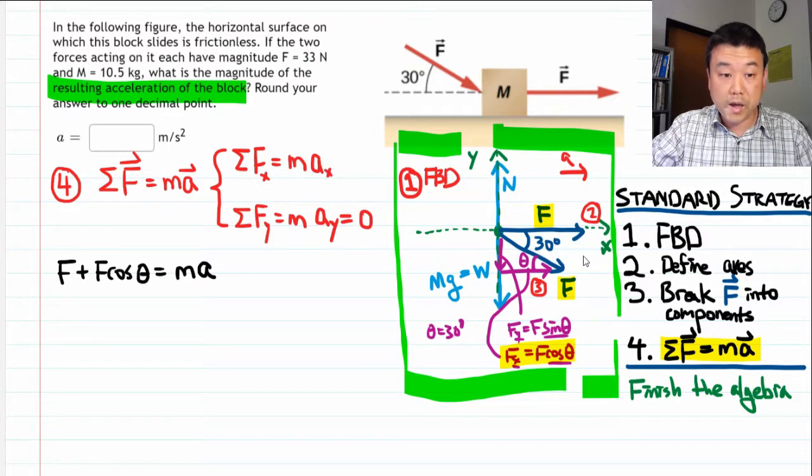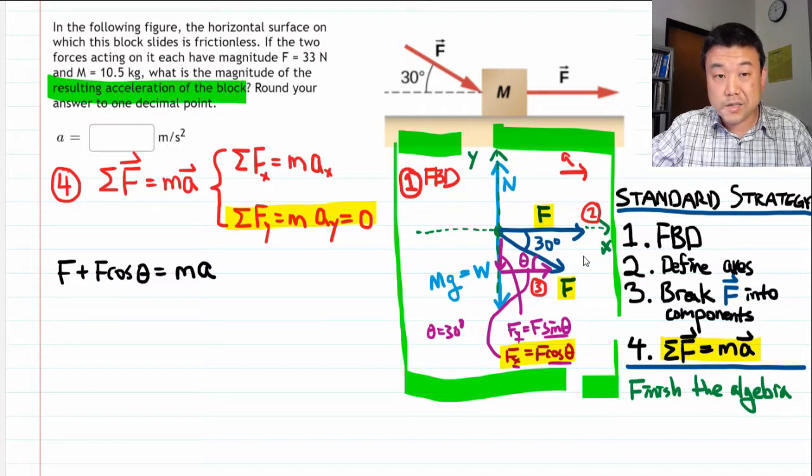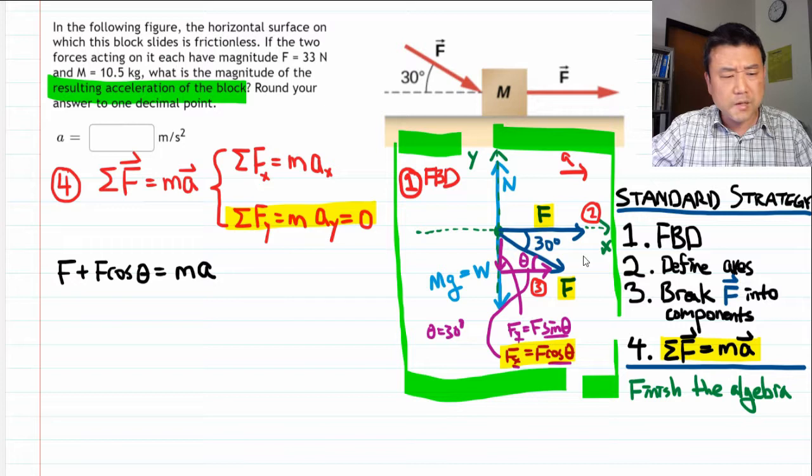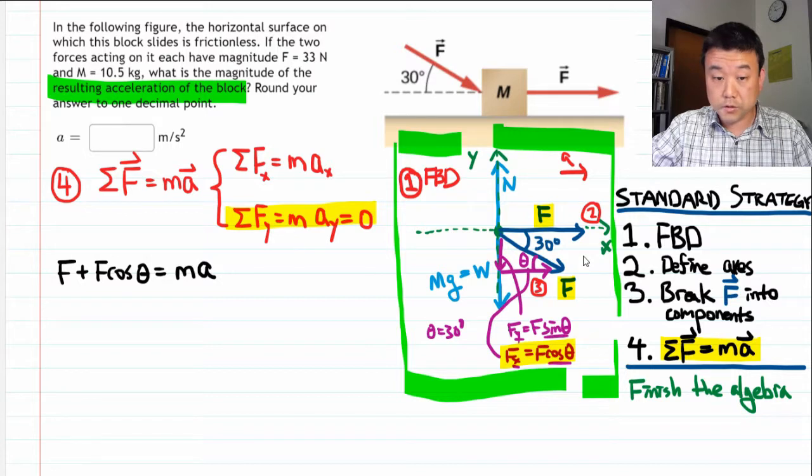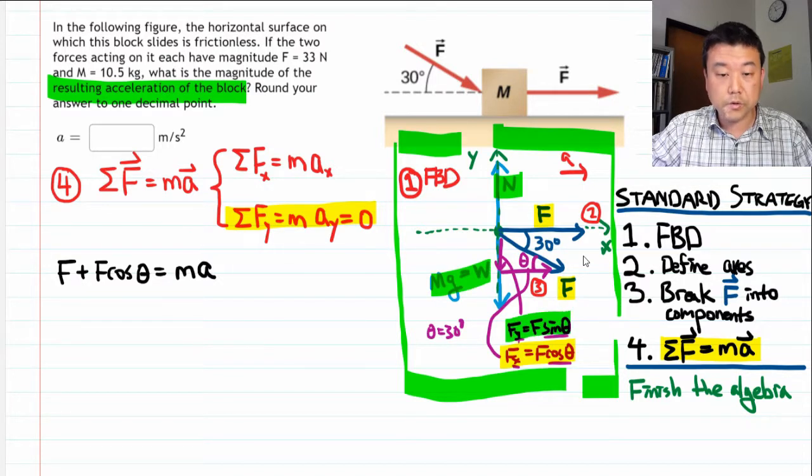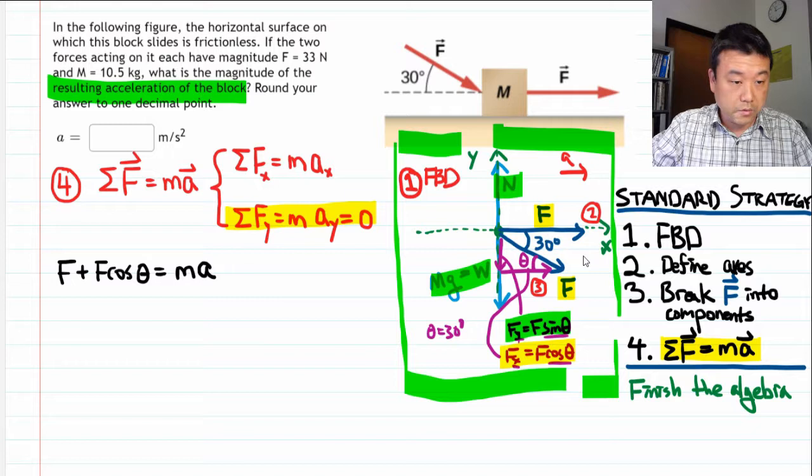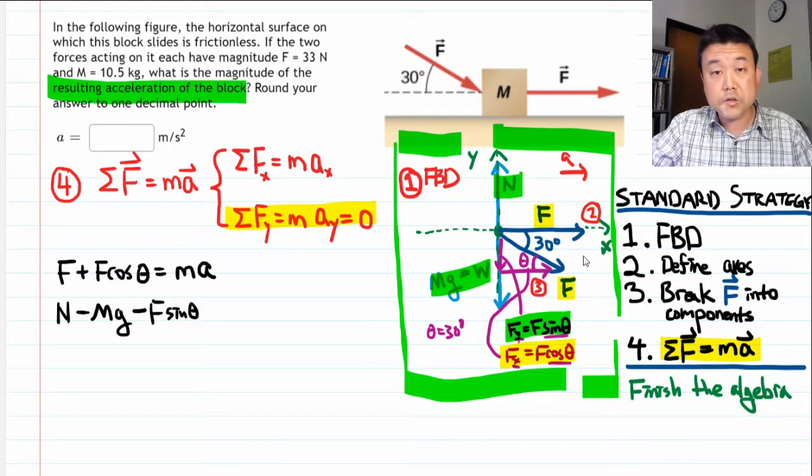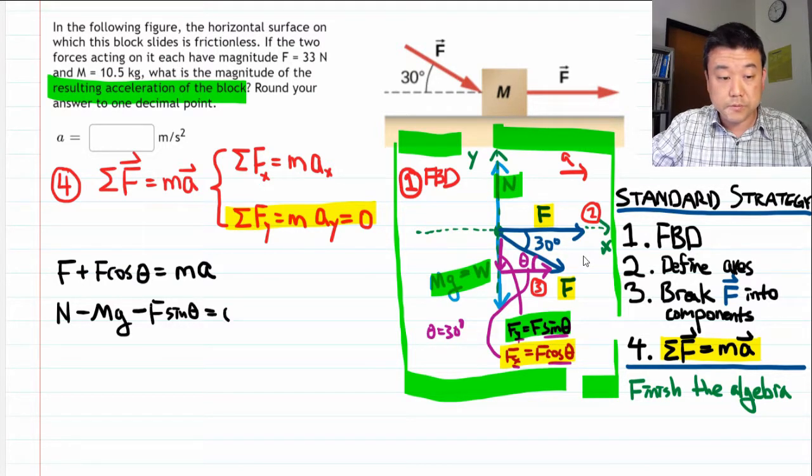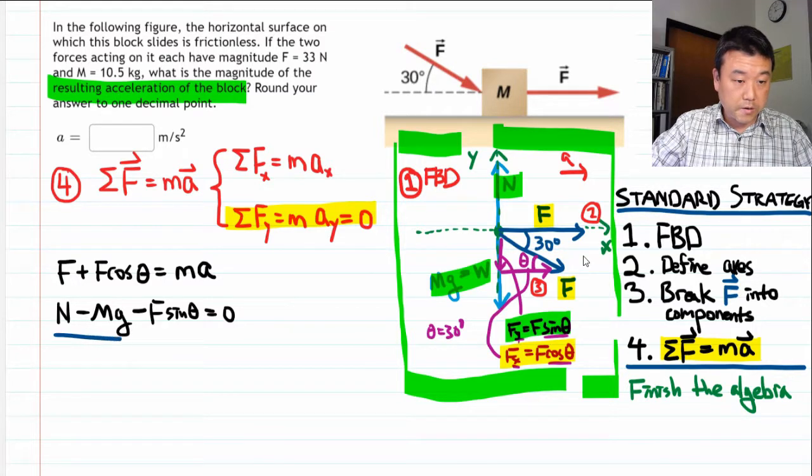And we do have second equation that we can write down. For this question, it doesn't give us any information that we are looking for. But let me write it down anyway for the sake of completeness. So the net force along the y-direction involves the normal force, the gravity, and the y-component of one of the applied forces. So saying that the normal force is in the positive direction, minus mg, and I guess y-component of f is also downward. So minus f sine theta. And by the choice of our axis, this is equal to zero.